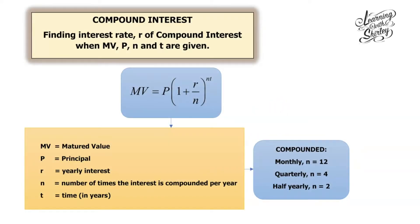Hi everyone, welcome back to my channel. I received a few requests from students asking me how to find the interest rate R of compound interest when the matured value, principal, N and T are given. So in this video, I've included 2 sample questions which you can take as reference for your revision. So before we hit the questions, let's look at this formula again.